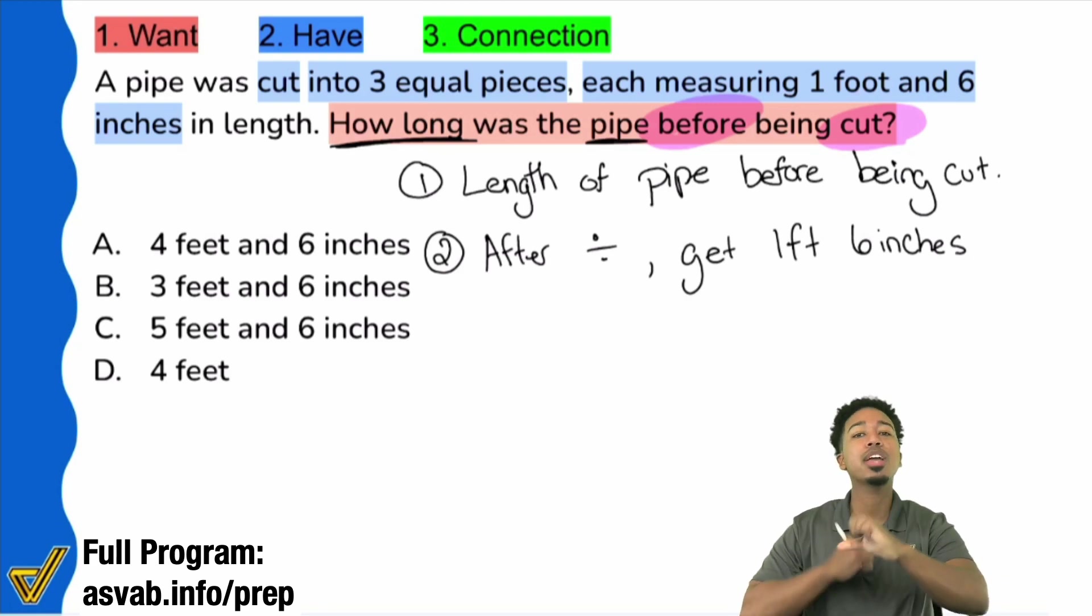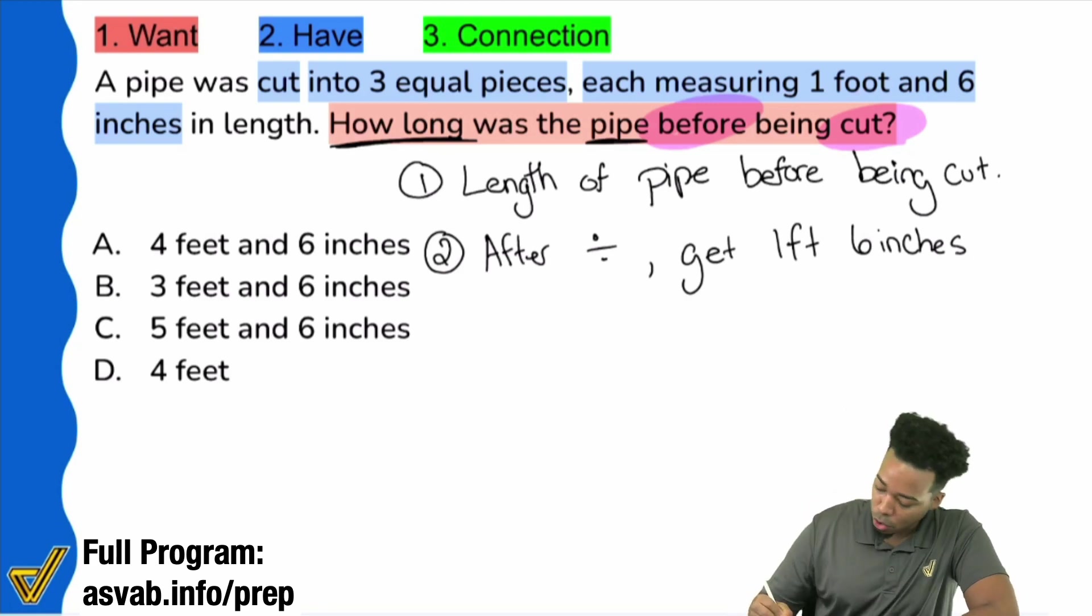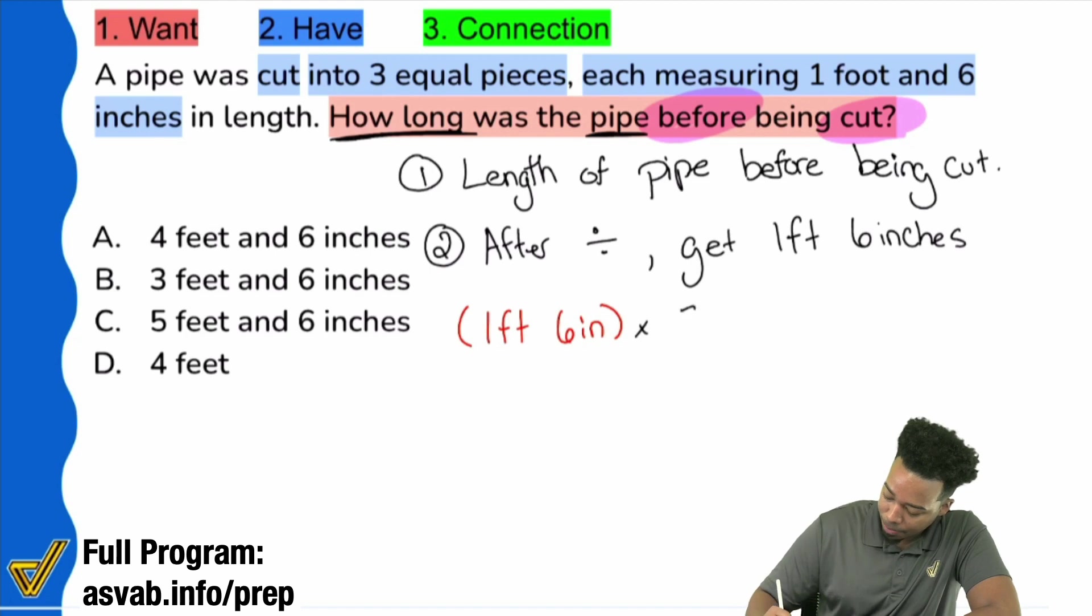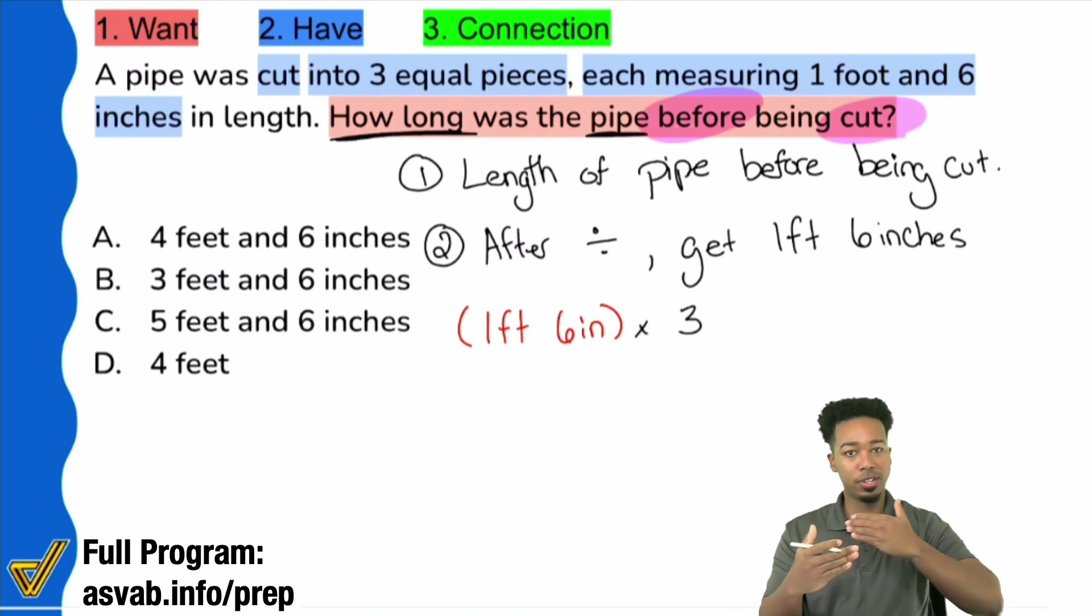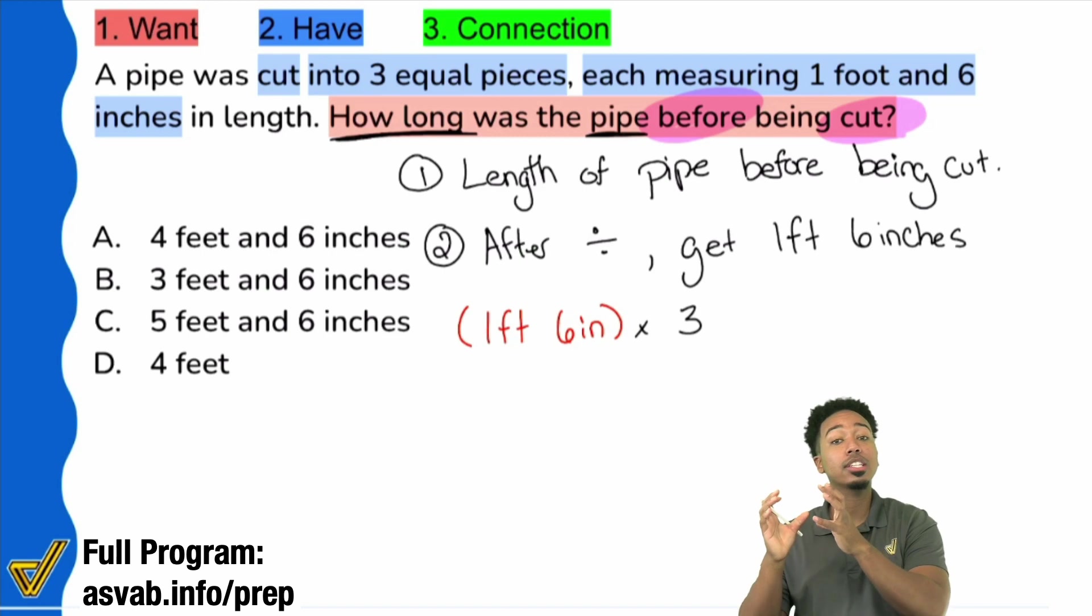Now if we're going to see what it was before the division, we have to work backwards. So what we're doing is we're going to take that one foot six inches and we will multiply that by three. We're working backwards. Again, that's the connection. We're looking to see what happened before it got cut. If you're looking to see before a division, you are multiplying to get back there. Opposite operations.